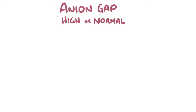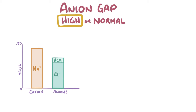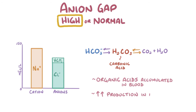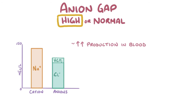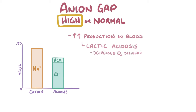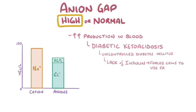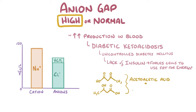The first category is high anion gap metabolic acidosis. In this case, the bicarbonate ion concentration decreases by the binding of bicarbonate ions to protons, which results in the formation of carbonic acid, which subsequently breaks down into carbon dioxide and water. These protons can come from organic acids which have accumulated in the blood, or from increased production in our body. One example is lactic acidosis, where decreased oxygen delivery to the tissues leads to increased anaerobic metabolism and the buildup of lactic acid. Another example is diabetic ketoacidosis, which can happen in uncontrolled diabetes mellitus, where the lack of insulin forces cells to use fats as primary energy fuel instead of glucose. Fats are then converted to ketoacids like acetoacetic acid and beta-hydroxybutyric acid.